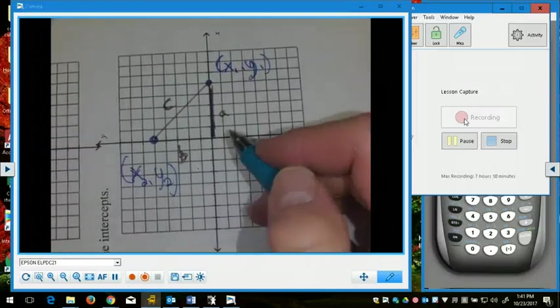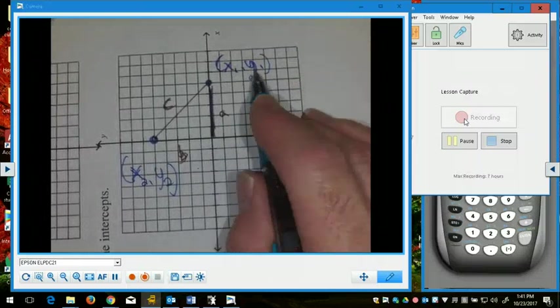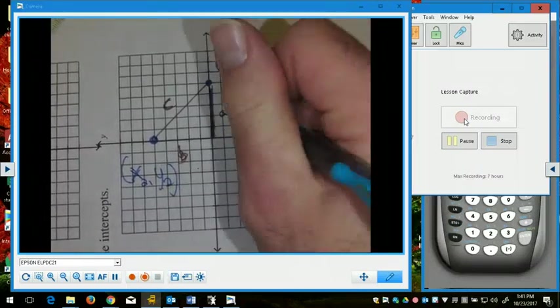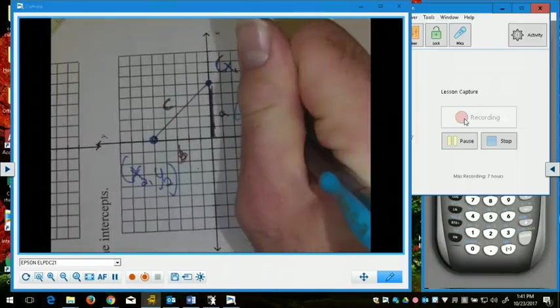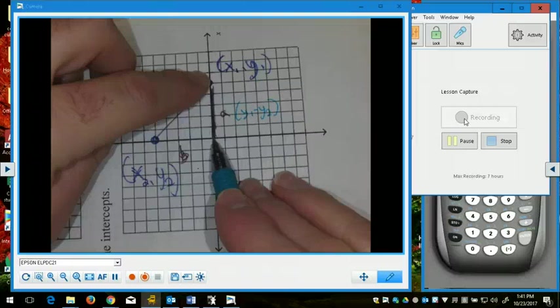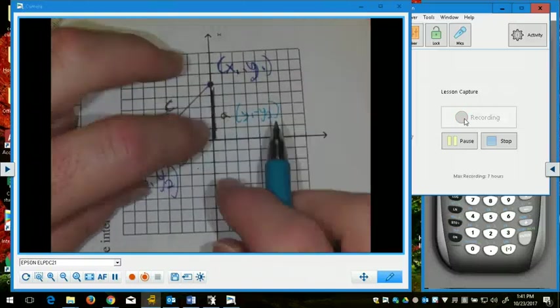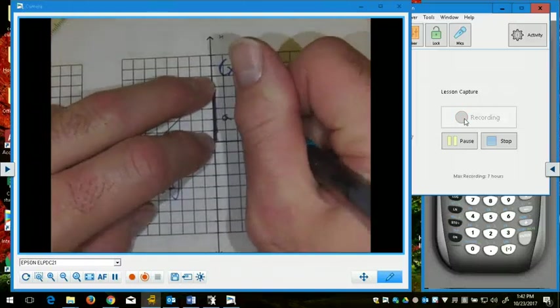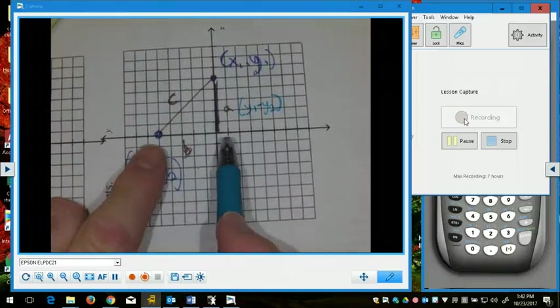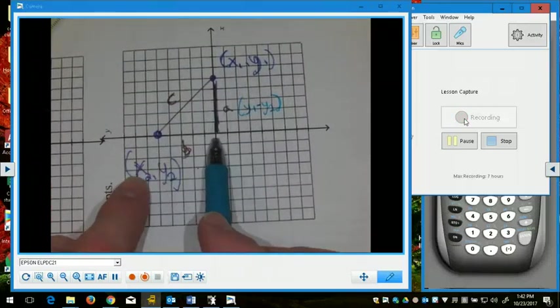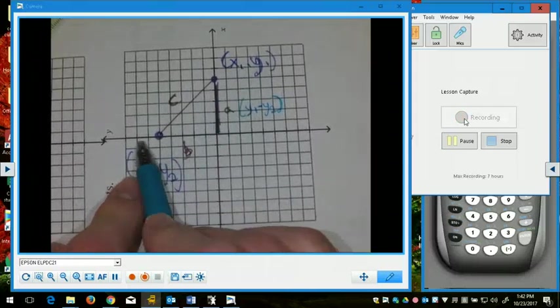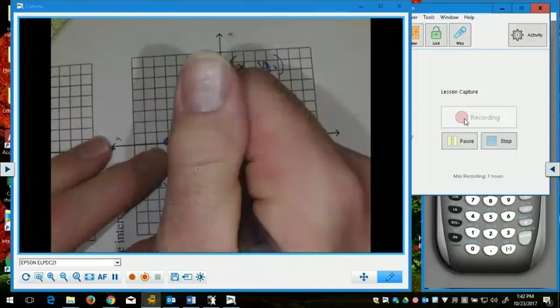What this means is that this height right here is this height minus this height. So, it is y sub 1 minus y sub 2. That gives me the vertical distance between those two points. The vertical distance between those two points is y sub 1 minus y sub 2. The horizontal distance between these two points is the difference of the x coordinates, x minus x. So, x sub 1 minus x sub 2.